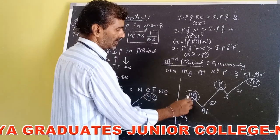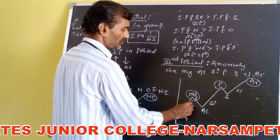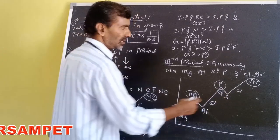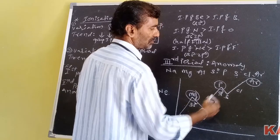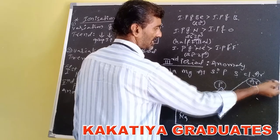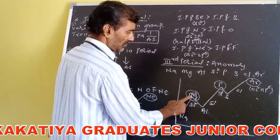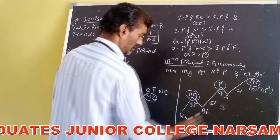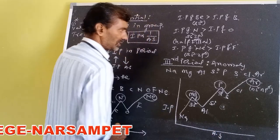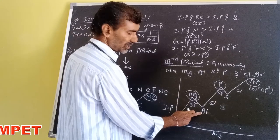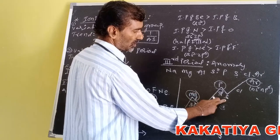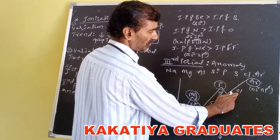Because magnesium has 3s² configuration — a completely filled s orbital. Phosphorus has 3p³ configuration — that is half-filled. Argon has 3s², 3p⁶ — a completely filled configuration. Therefore: IP of magnesium is greater than IP of aluminium, IP of phosphorus is greater than IP of sulfur, and IP of argon is greater than IP of chlorine.